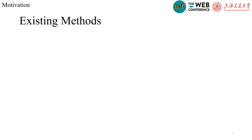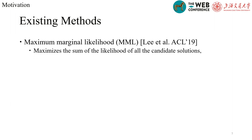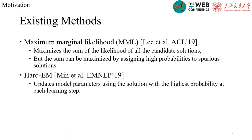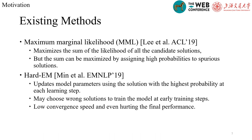Many methods have been proposed to overcome this challenge. One of them is maximum marginal likelihood. It maximizes the sum of the likelihood of all the candidate solutions. This method has a certain effect, but the sum can be maximized by assigning high probabilities to spurious solutions, which will lead to relatively poor performance. Another one is the hard EM approach. It updates model parameters using the solution with the highest probability at each learning step. But it may choose wrong solutions to train the model at early training steps, which will lead to low convergence speed and even hurt the final performance.